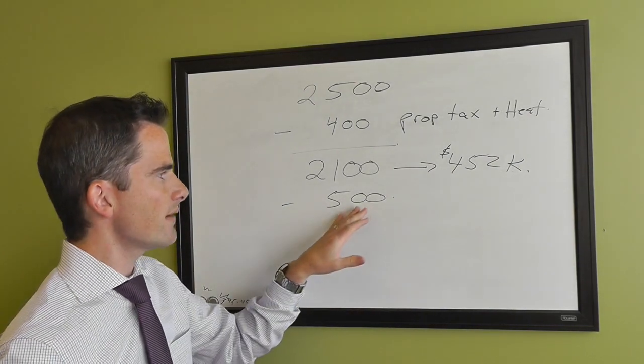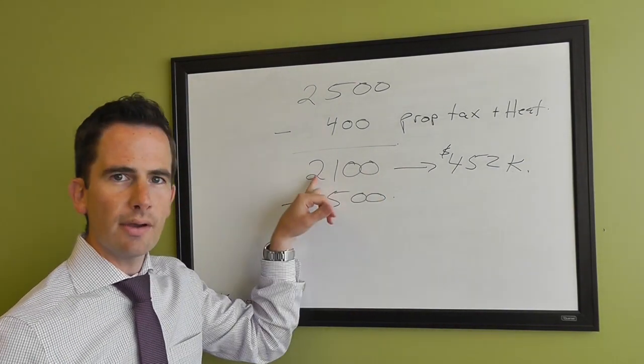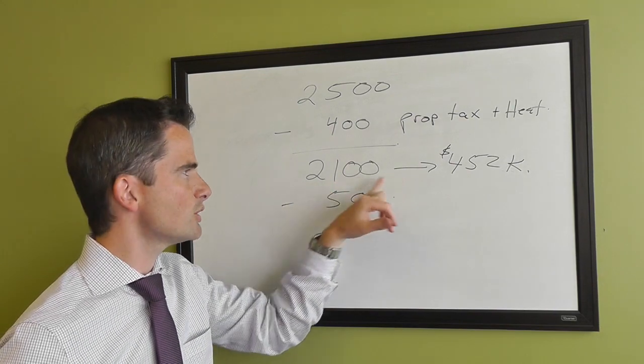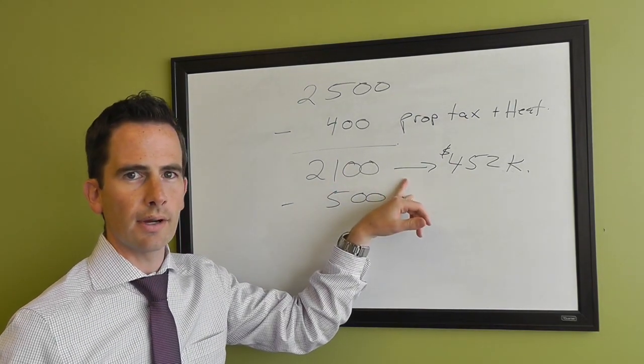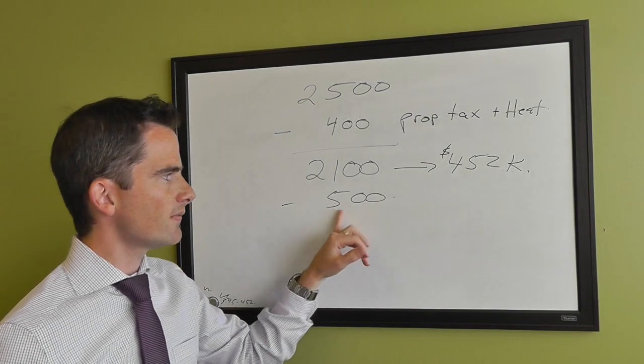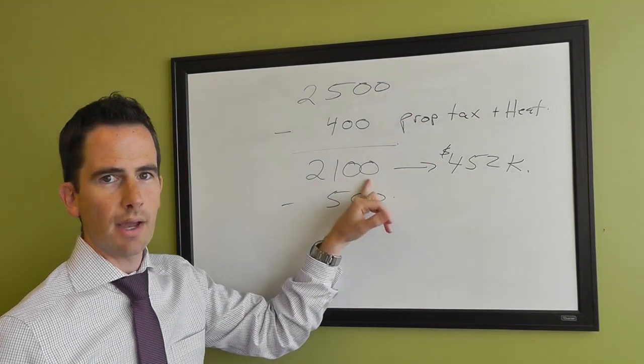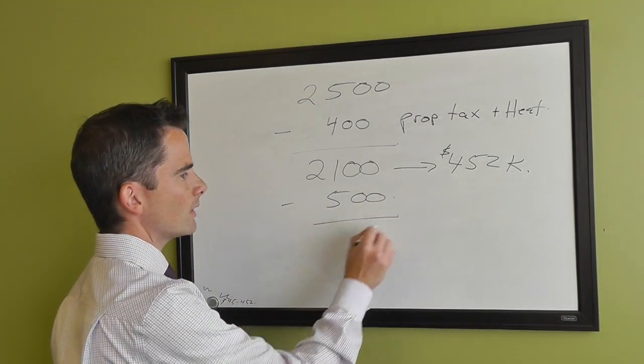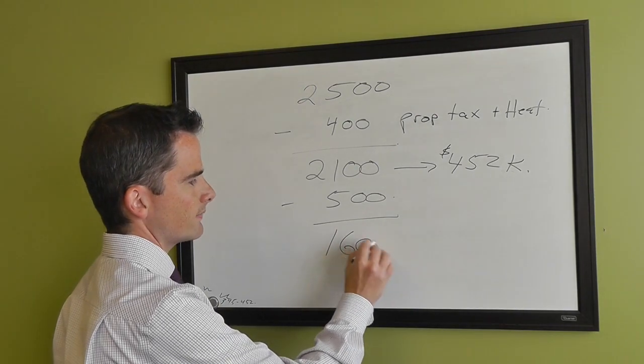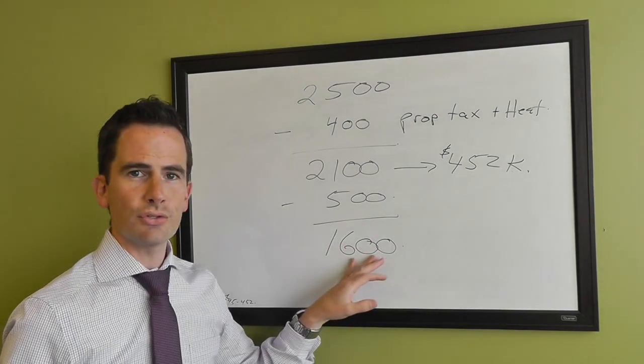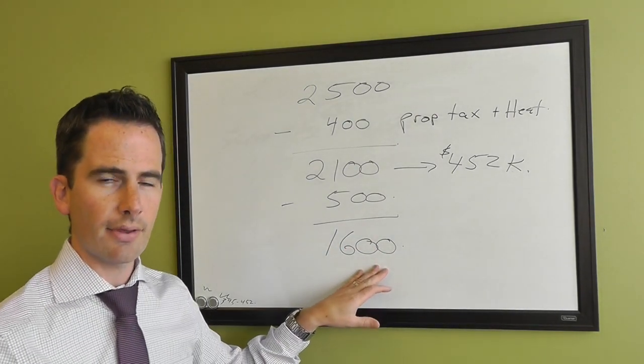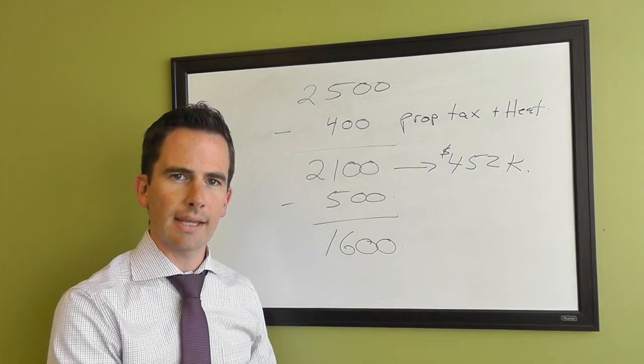That means that $500 a month would have to come out of the amount of mortgage payment that you qualify for without the car payment. So if you take $500 a month out of this $2,100, then the mortgage payment that you now qualify for would be closer to $1,600 per month.